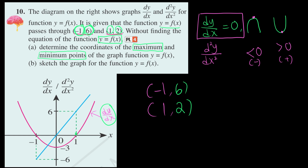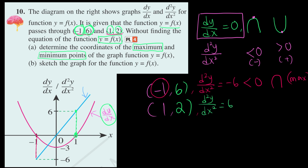Now we prove whether each is a minimum or maximum using the concavity test. d²y over dx² is represented by the blue line. When x equals negative 1, d²y over dx² equals negative 6, which is less than 0 — concave downward — so this is a maximum point. When x equals 1, d²y over dx² equals 6, which is positive — concave upward — so this is a minimum point. Therefore, (-1, 6) is the maximum and (1, 2) is the minimum.